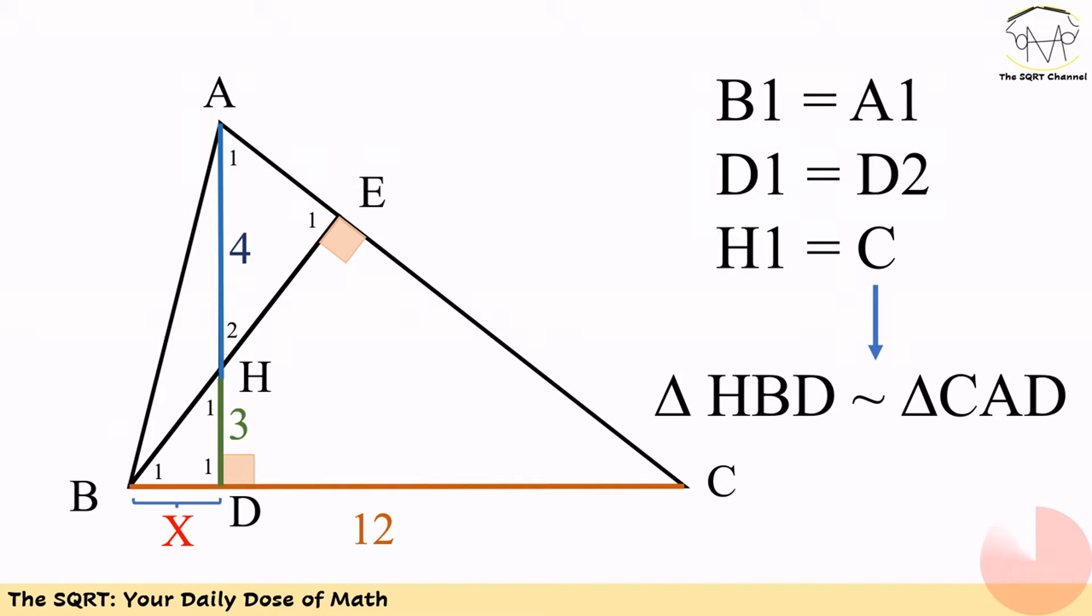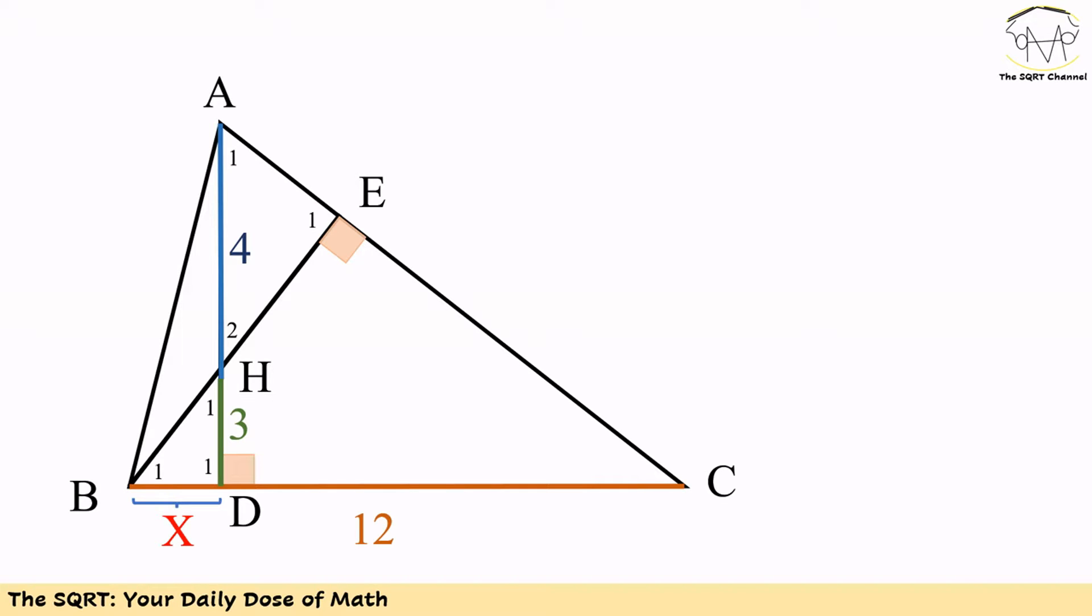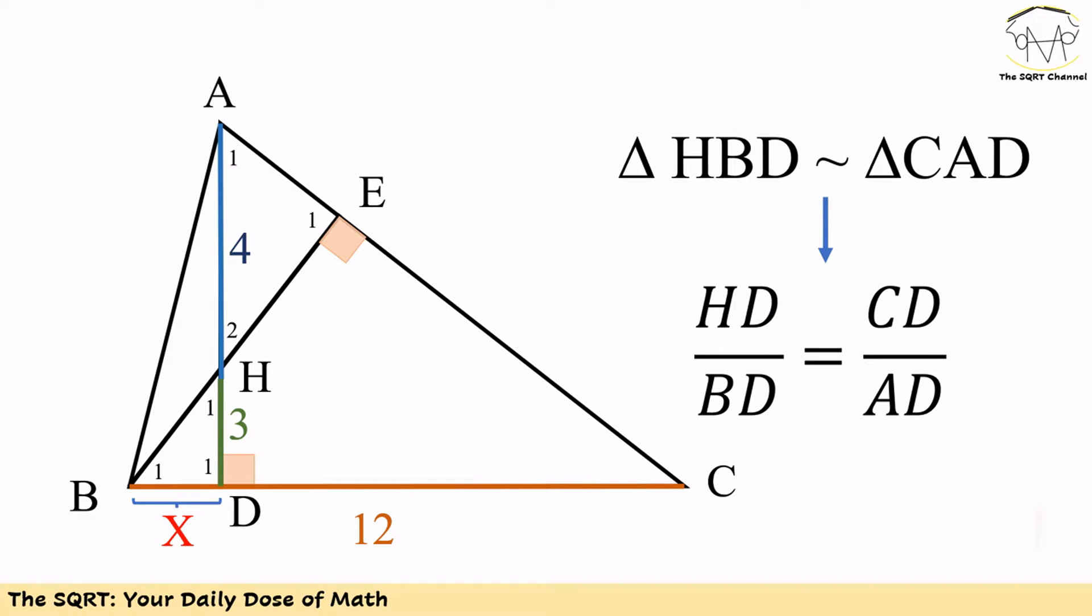Since triangles HBD and CAD are similar, we can write HD divided by BD is equal to CD divided by AD.